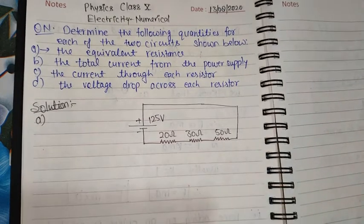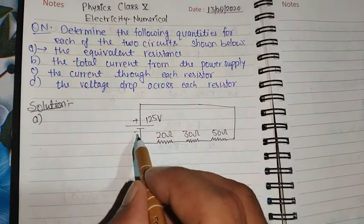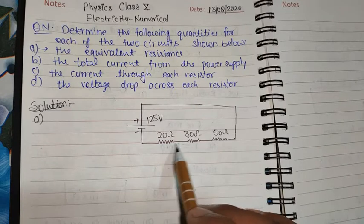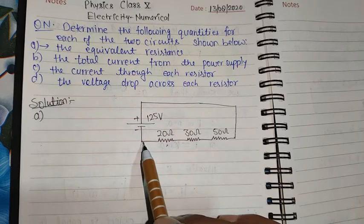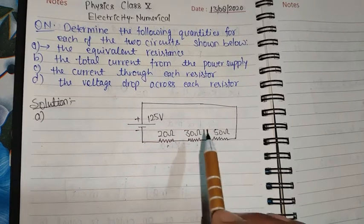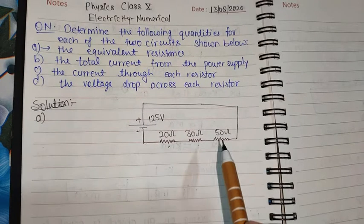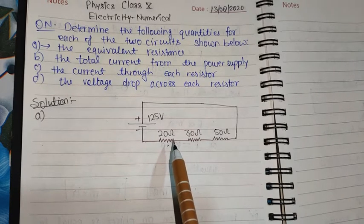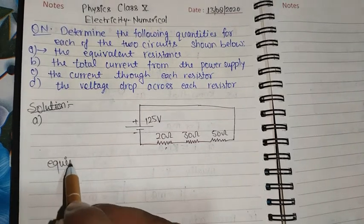Let's see how to solve this question. There are three resistors: 20 ohm, 30 ohm, and 50 ohm. They are connected in series. Series means end-to-end connection. When resistors are connected in series, the total equivalent resistance is equal to the sum of the individual resistances.